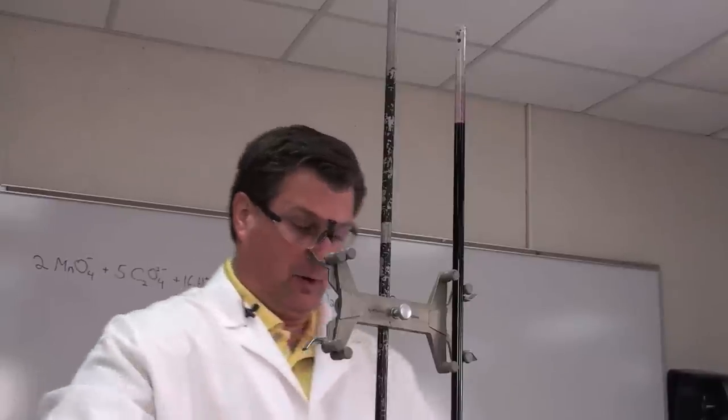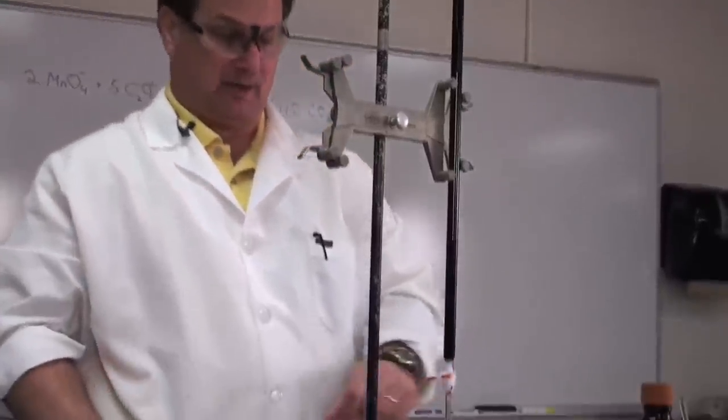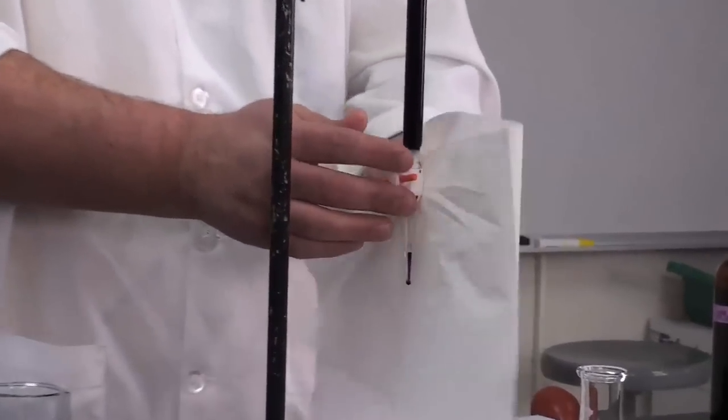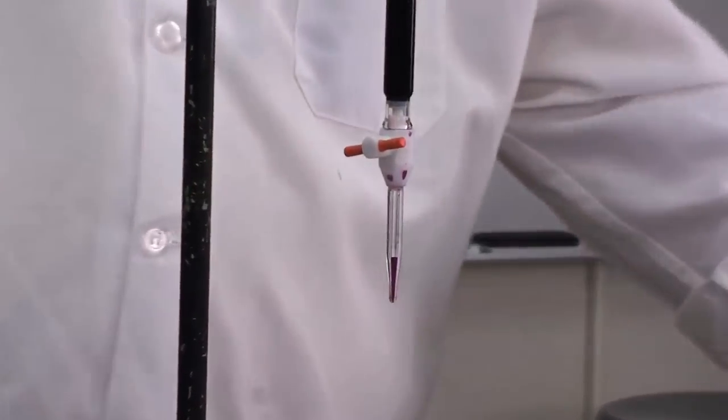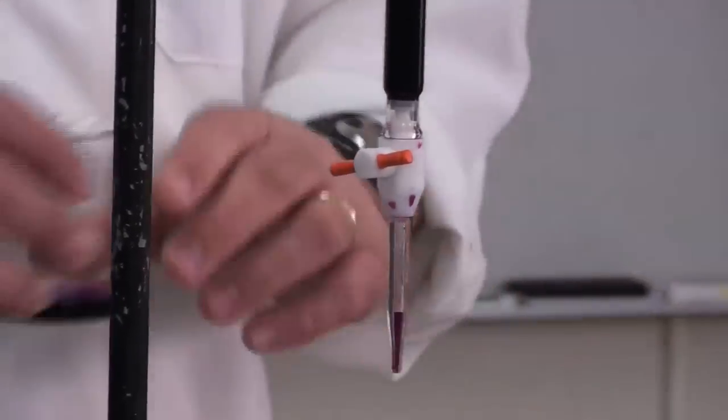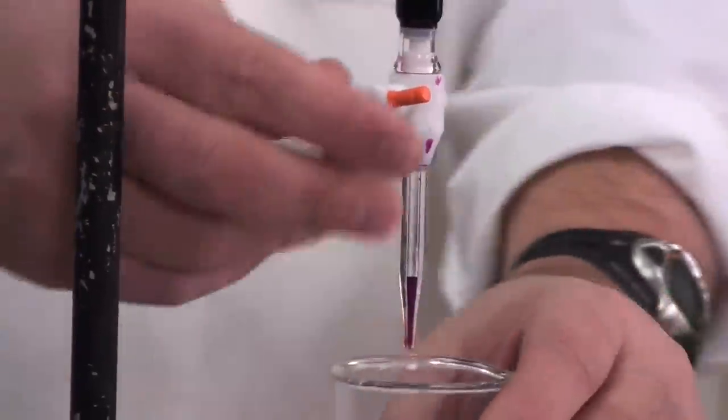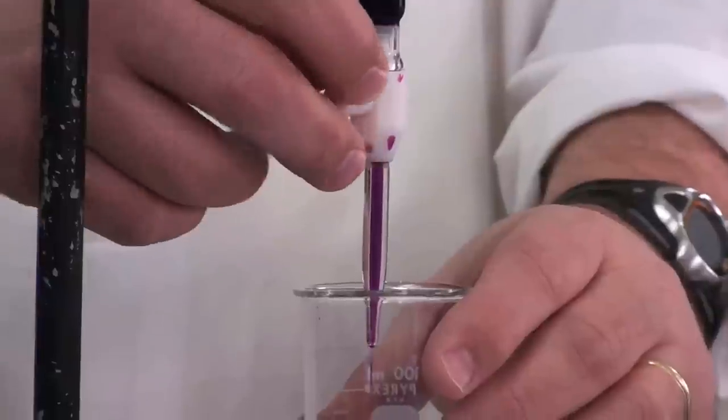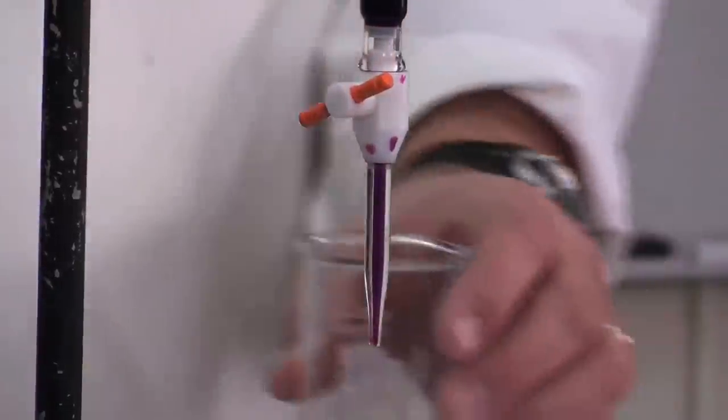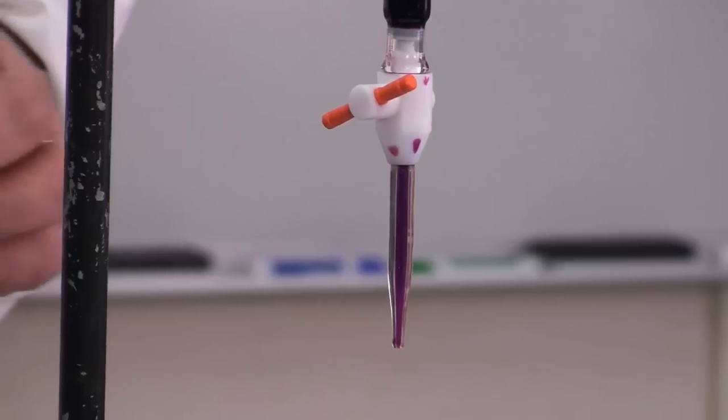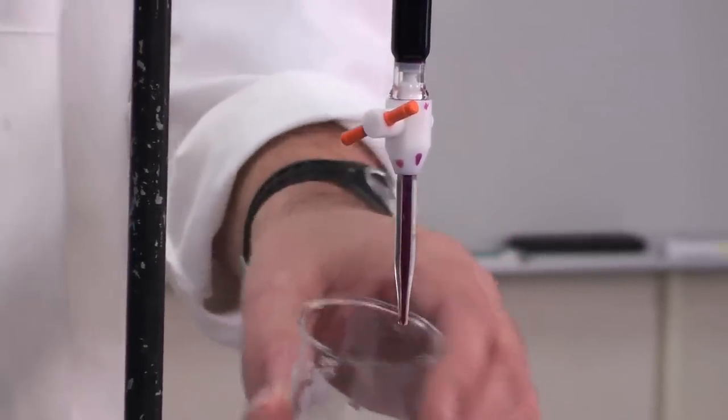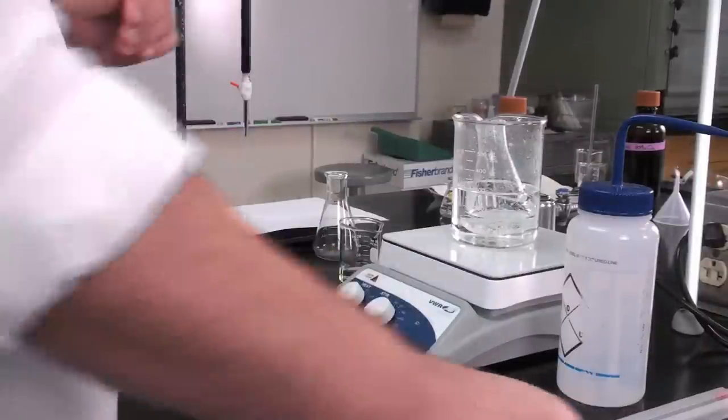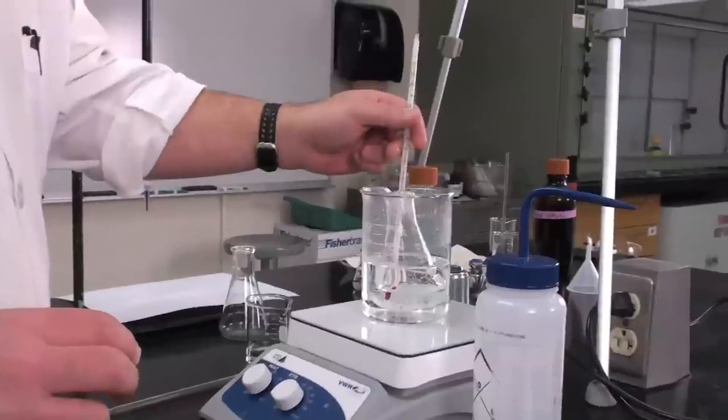Now the other thing we want to do—notice the tip down here has air bubbles in it. We want to make sure we get all of that out. That can change or alter our volumes in an irregular way. The easiest way to get that out is to put a waste beaker underneath and let some liquid flow until the bubble is gone. You want to make sure all the air bubble is gone from the tip of your burette. Let's check our temperature and see if our solution is ready to go.